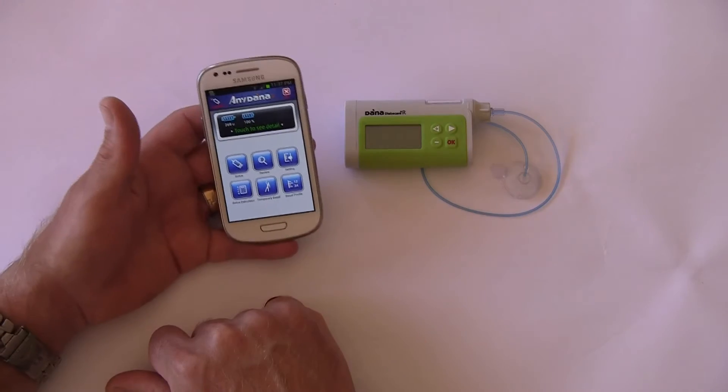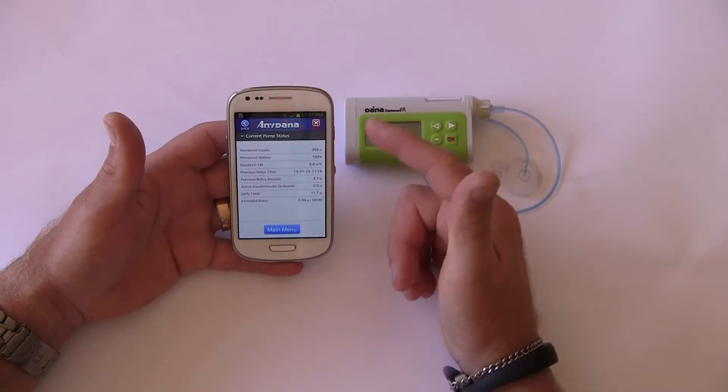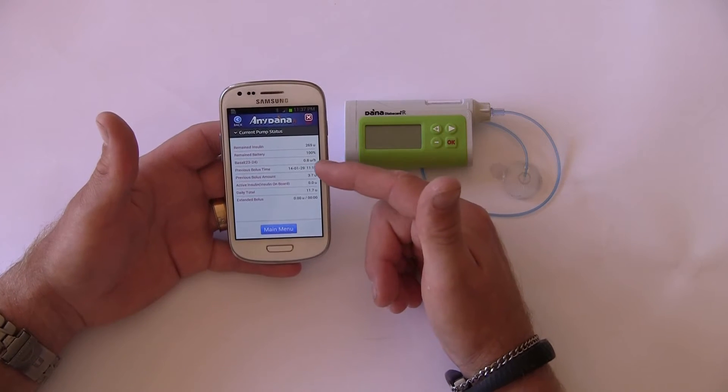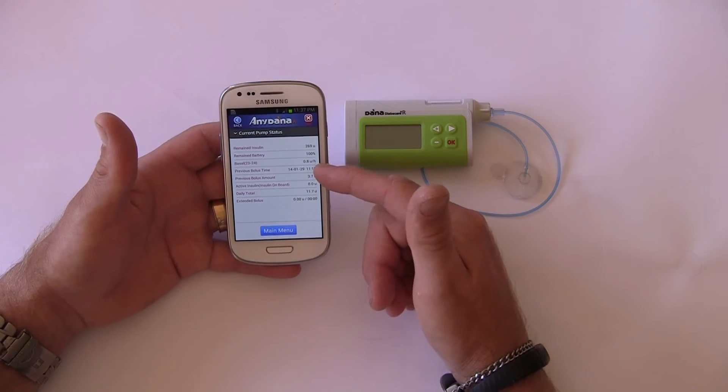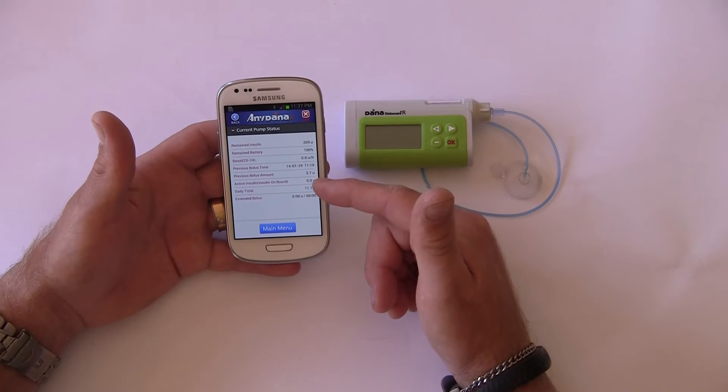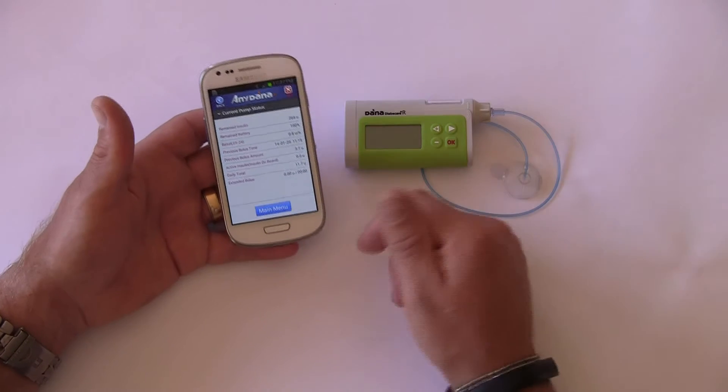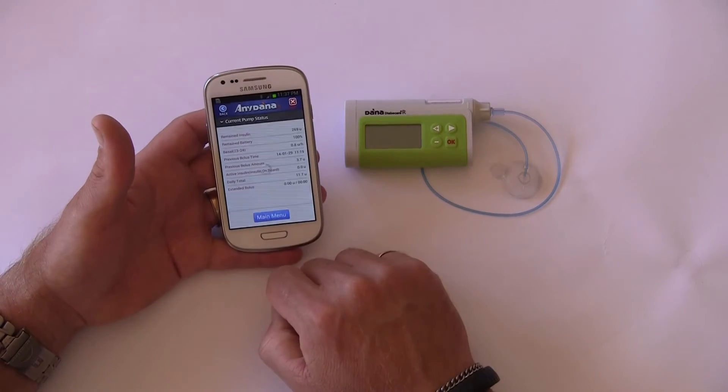We can touch here to see more information that shows the insulin volume in the reservoir, the battery percentage, the basal rate at its current rate, the previous bolus time and amount, and whether there's any active insulin currently still working from previous boluses. This particular pump has zero units active in it.